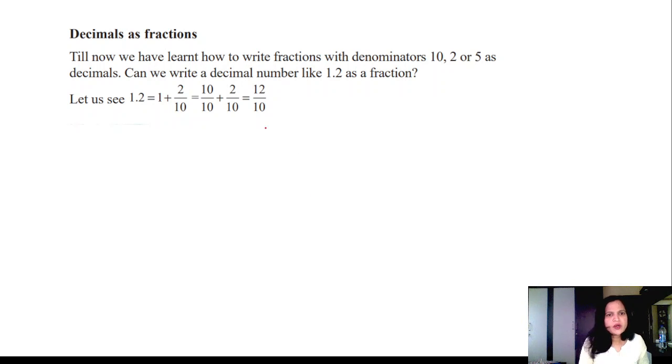Decimals as fractions. Till now we have learned how to write fractions with denominators 10, 2 or 5 as decimals. Can we write the decimal number like 1.2 as a fraction? Yes. How to convert the decimal to fraction? This is 1.2: 1 plus 2 by 10, which is 12 by 10. This is the fraction form. Otherwise directly we can write this 1.2 as 12 above, eliminating this point, and then write one zero below. This way also you can write.